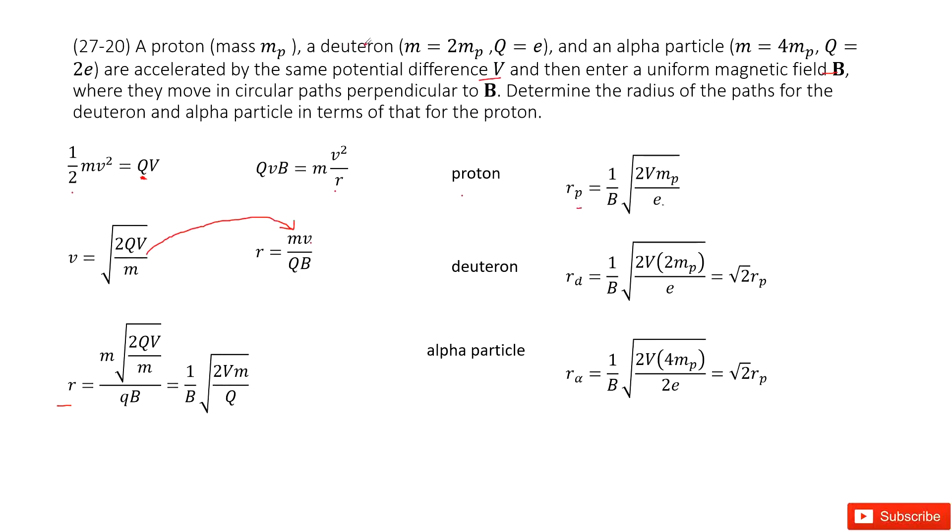The deuteron is the second charged particle. The mass is 2mp and the charge Q is e. So Rd = √2 times Rp. We write it there.